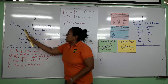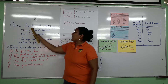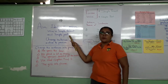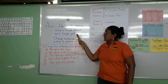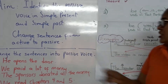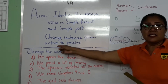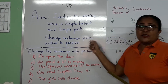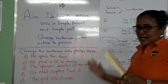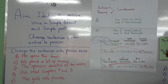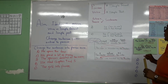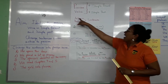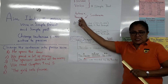The aim of this class is that you have to identify the passive voice in simple present and simple past, and also change sentences from active to passive. To understand this, first of all, we have to know that we can have active and passive sentences.